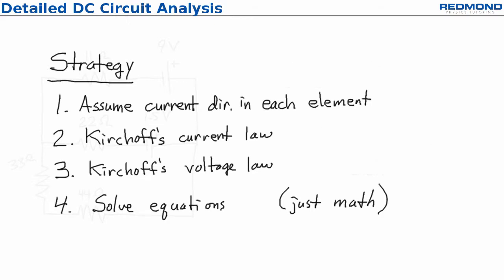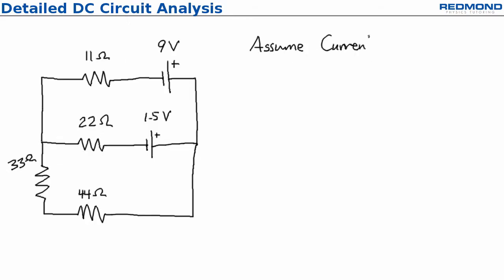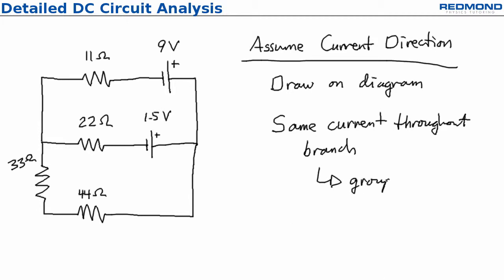First I assume the current direction for each element. It's very important to draw this direction on your circuit diagram. It's also important to keep the same current throughout each branch or group of elements that are all in series.